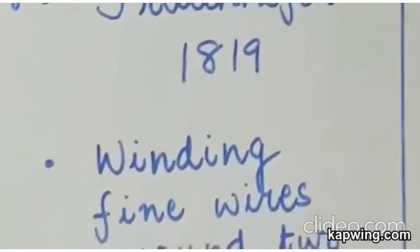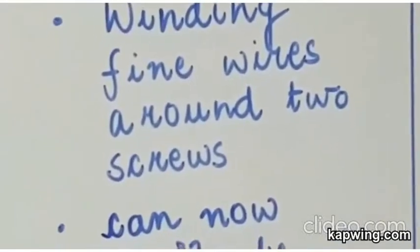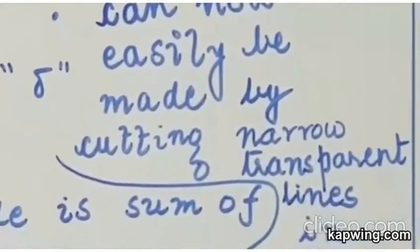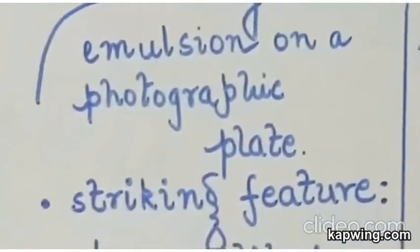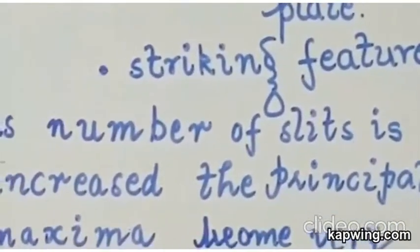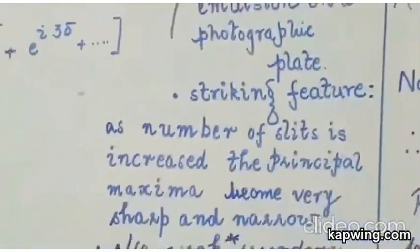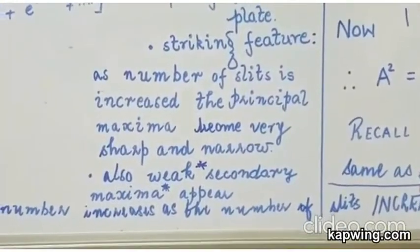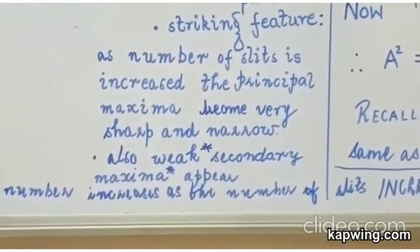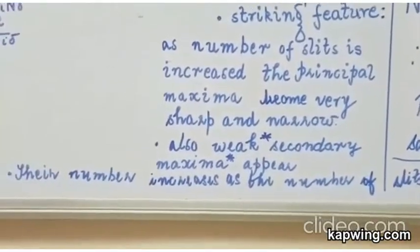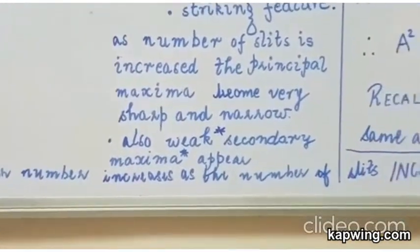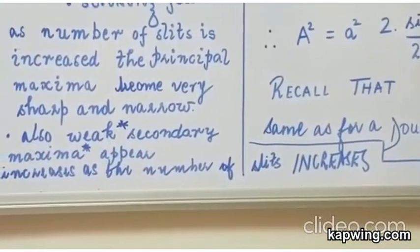As you can see from the right board I have written that it was Fraunhofer in 1819 who discovered or rather made the first grating. His grating consisted of winding fine wires around two screws. Now you can easily make these gratings by cutting narrow transparent lines in gelatin emulsion on a photographic plate. The one single most striking feature of the grating pattern as you obtain is if you use monochromatic light is that as you increase the number of slits the principal maxima become very sharp and narrow. Also weak secondary maxima appear. Now if you can see I have put an asterisk sign around secondary and maxima. Why? Because the number of the secondary maxima increases as the number of slits is increased or as the number of slits increases.